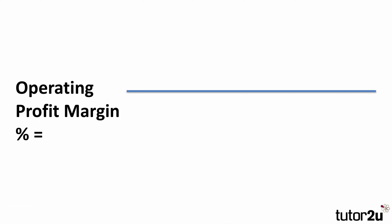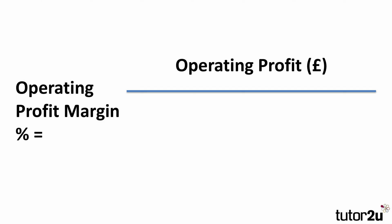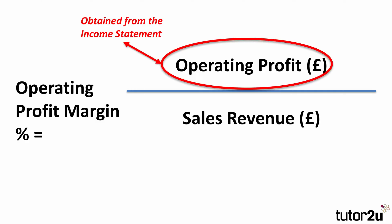So the operating profit margin is a profitability ratio, as always expressed as a percentage. The formula for this is to take the operating profit in monetary value divided by the sales revenue, and because we want a percentage, we multiply that fraction by 100 to give us the percentage margin.